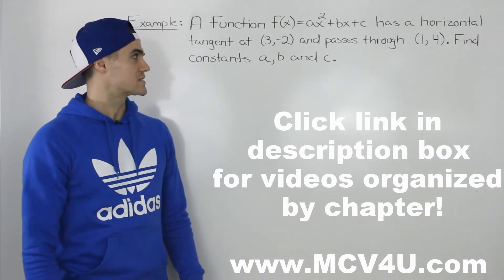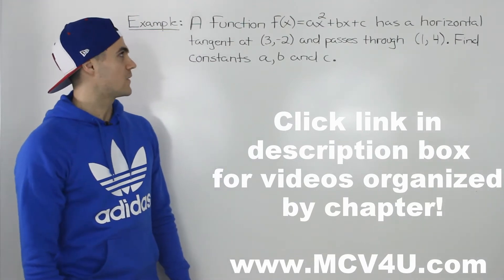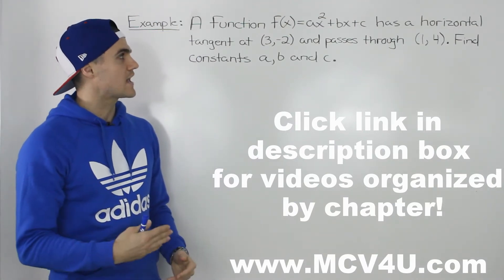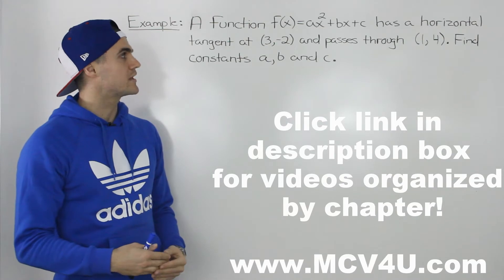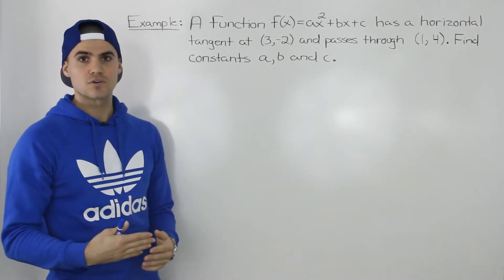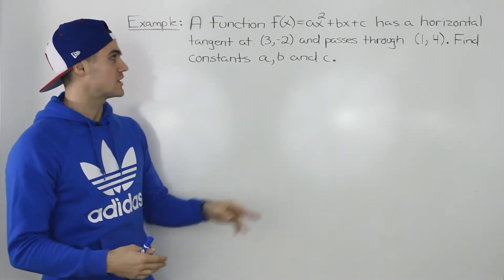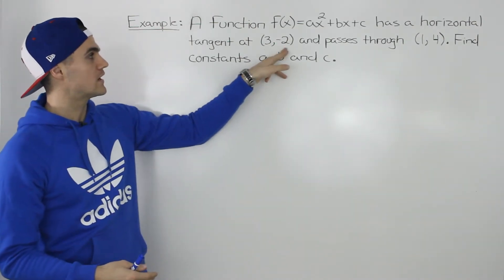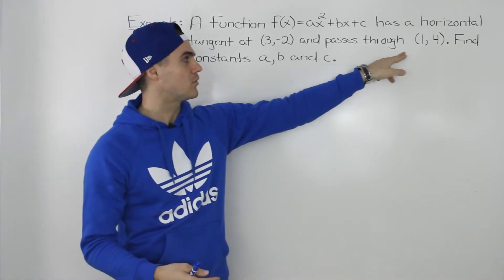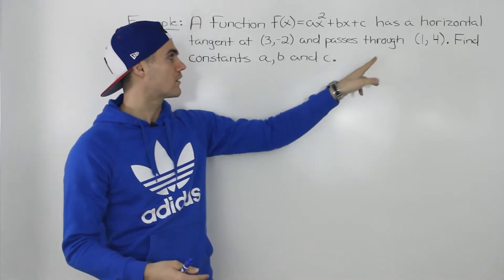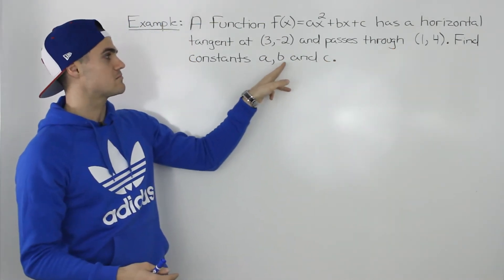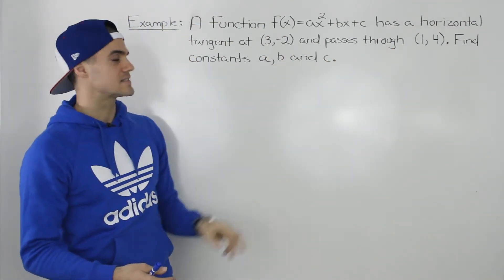Welcome back everybody. Moving on to the next example. We have a function f of x equals ax squared plus bx plus c, and it has a horizontal tangent at the coordinate (3, -2) and passes through the point (1, 4). Find constants a, b, and c.